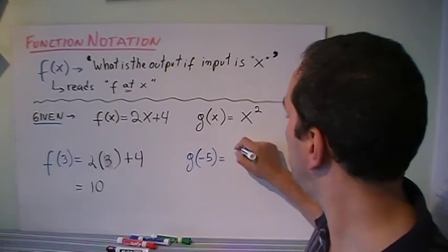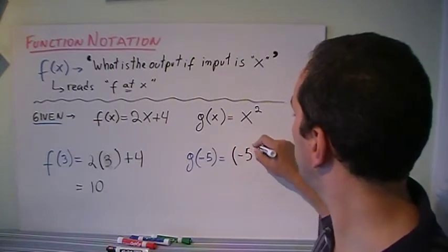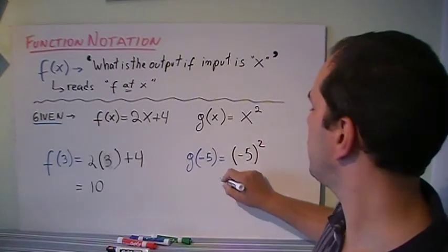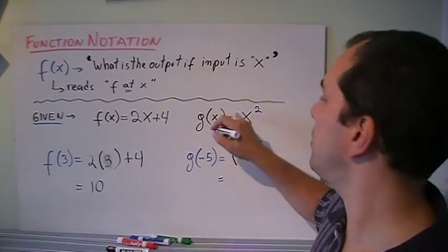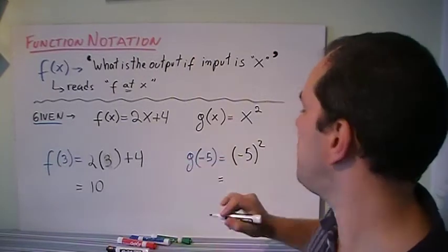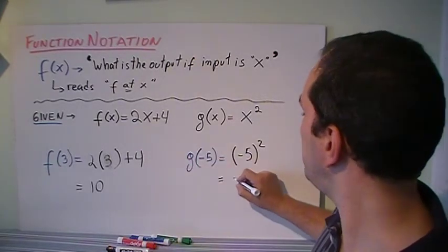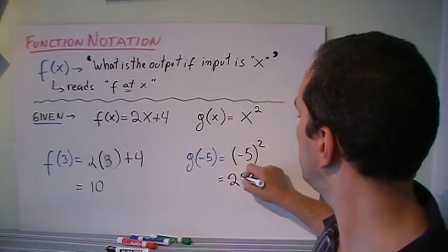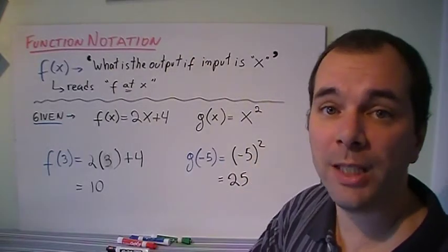So I'm going to have minus 5 squared. You just replace your input into your equation and put it between brackets so you can get the signs properly. So minus 5 squared is positive 25. That is function notation.